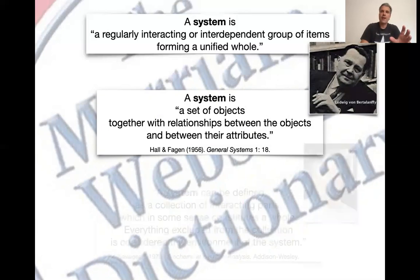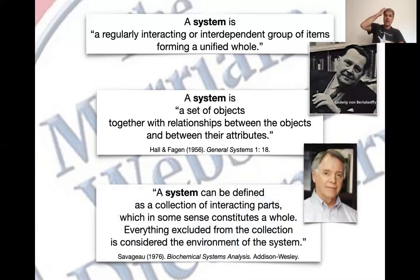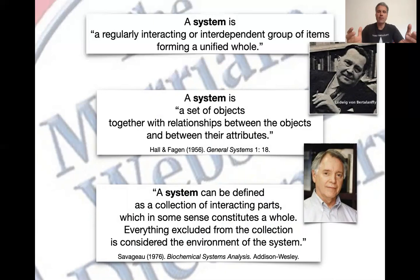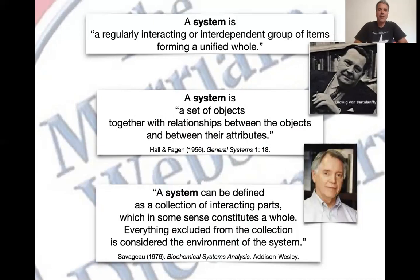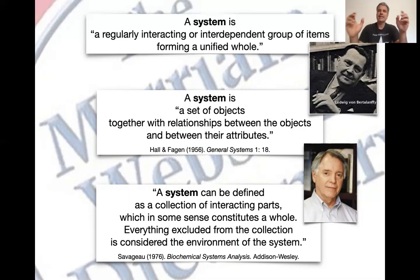Let's go on and add to this definition. Here is Michael Savageau, a biochemist and modeler, who says a system can be defined as a collection of interacting parts — so here's the clockwork universe underneath again — which in some sense constitutes a whole. Everything excluded from the collection is considered the environment of the system. So the definition of a system, very importantly, is setting a system apart from the rest of the universe.